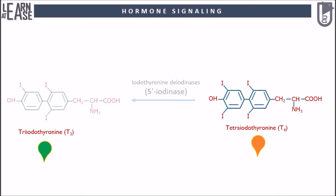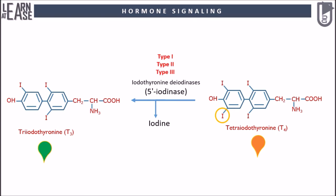The conversion of T4 to T3 is catalyzed by the enzyme iodothyronine deiodinase, where iodine located on the 5th carbon of the 2nd tyrosine ring of T4 is removed. Thus this enzyme is also known as 5' iodinase. In most vertebrates, three types of iodothyronine deiodinases are found which can carry out this reaction: type 1, type 2, and type 3 iodinases.